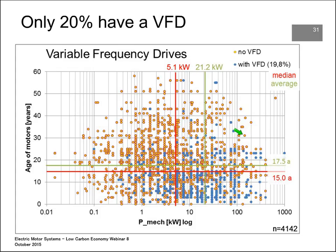Looking at how those 4,142 motors are controlled: only 20% have a frequency control or VFD. More than 50% of motors are smaller than 5 kW; the other 50% are larger than 5 kW, and the average size of these motors is 21 kW. While not 100% should have a VFD, there is potential for up to 30 to 40% of those motors to benefit from a VFD.